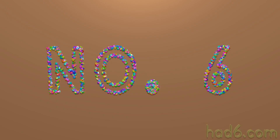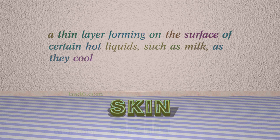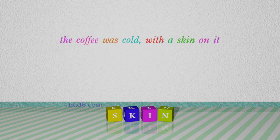Number 6: Skin. Which means a thin layer forming on the surface of certain hot liquids, such as milk, as they cool. For example: The coffee was cold, with a skin on it.